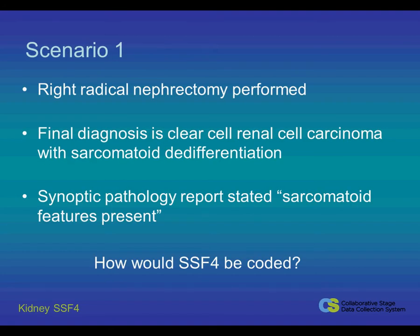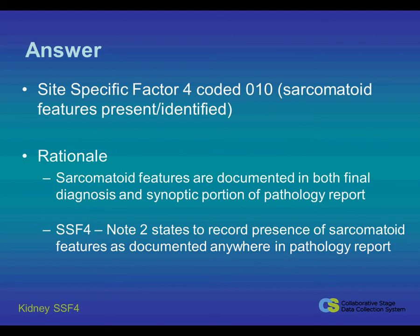In this first scenario, a right radical nephrectomy was performed which revealed a diagnosis of clear cell renal cell carcinoma with sarcomatoid differentiation. The Synoptic Pathology Report stated sarcomatoid features present. CITESWIC Factor IV should be coded 010 — sarcomatoid features are present or identified. Note 2 states to record the presence of sarcomatoid features as documented anywhere in the Pathology Report.